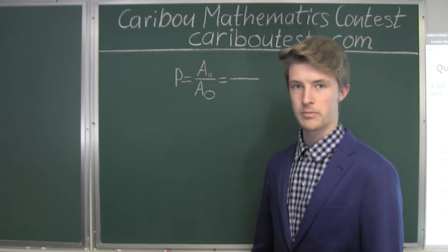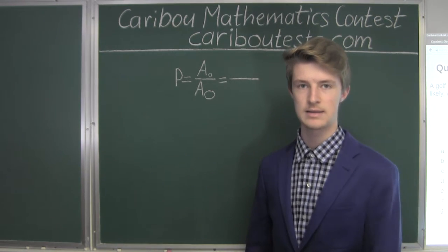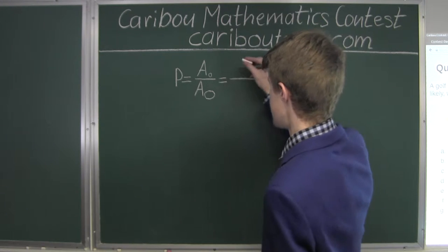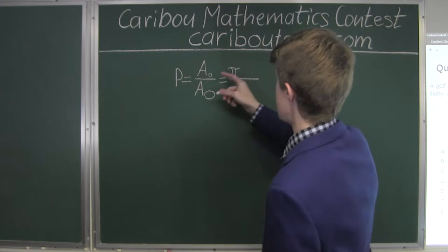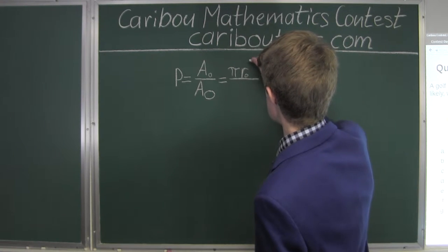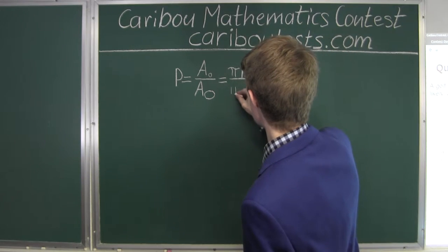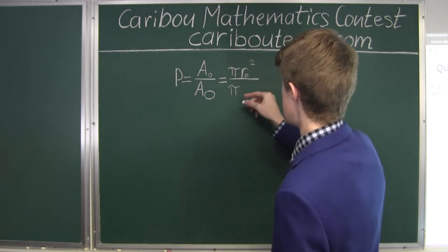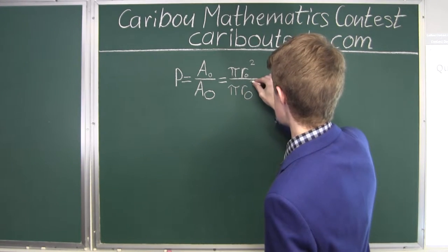And now we need to know the formula for the area of the circle, and for any circle it is pi times radius squared. So here we have pi, and then we have the radius of the small circle squared, and divide it by also pi times the radius of the larger circle squared.